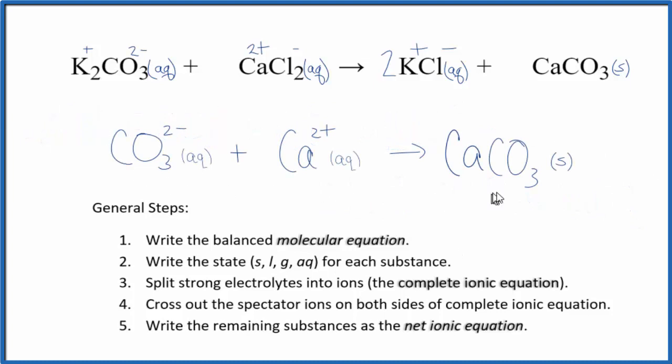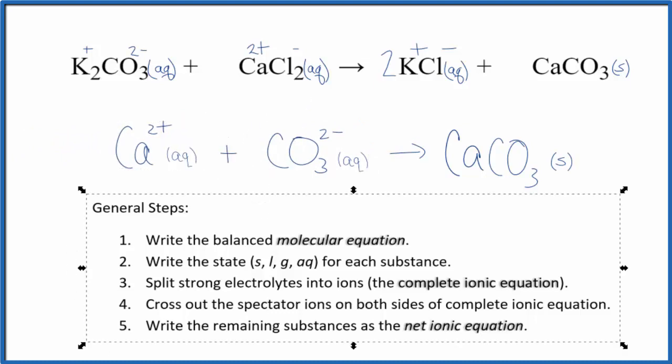So this is our net ionic equation for potassium carbonate plus calcium chloride. One thing you'll see is that the calcium often is put first and the carbonate is second. It doesn't really matter, but I guess it looks a little nicer. So that is the balanced net ionic equation for K2CO3 plus CaCl2.